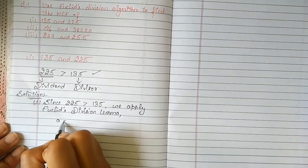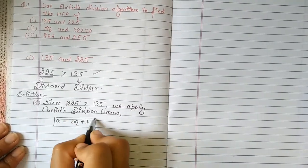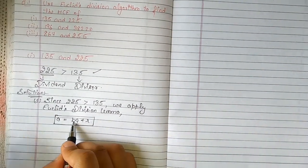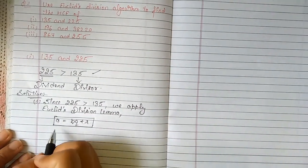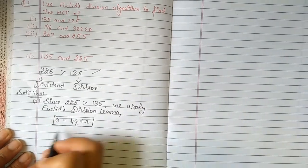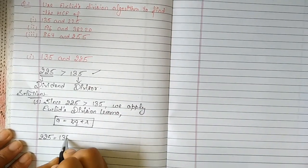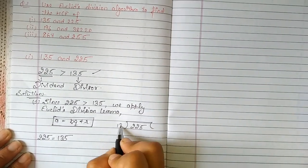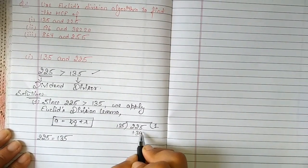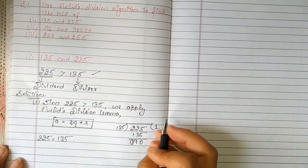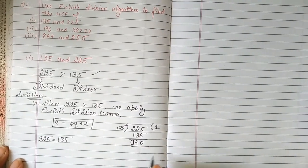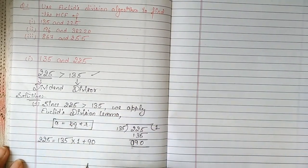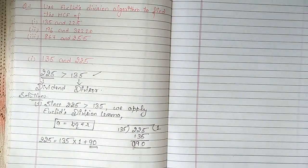What is Euclid's Division Lemma? That is a is equal to bq plus r. I have told you this in detail yesterday. That is, a is dividend, this is divisor, this is quotient plus remainder. Now according to this, 225 is dividend, 135 is divisor. We divide it. 135 goes into 225 one time, giving 135. Multiply by 1 plus 90.